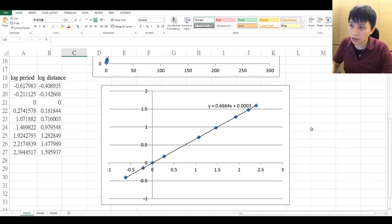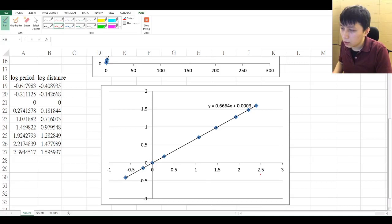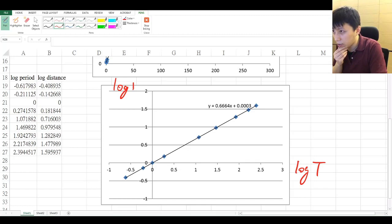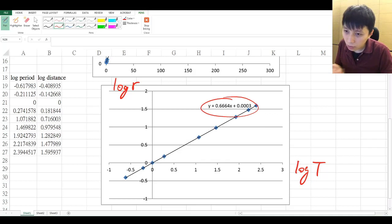And so then we can deduce, basically deduce the relationship between the two. And so let me try to derive it to you. So we have, this is actually log period, so log T. And so this is definitely log r, right? Yeah, that's right. So that means this equation can be rewritten as log r equals to 0.6664, which again should be very very close to 2 over 3, log T plus this.